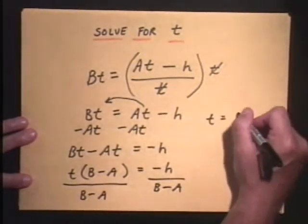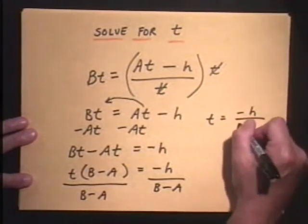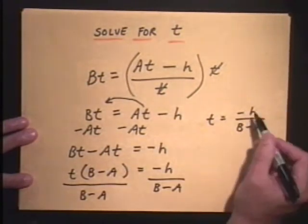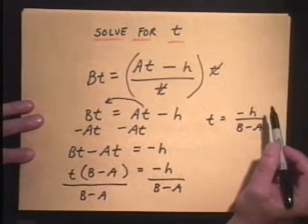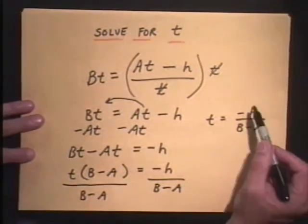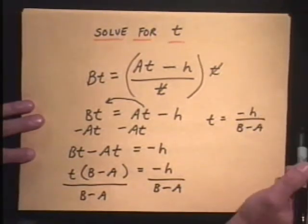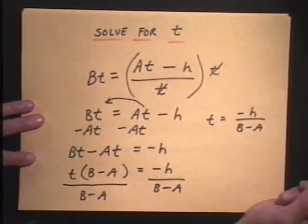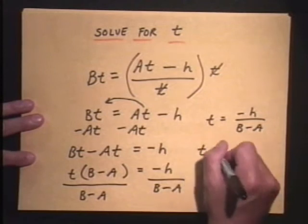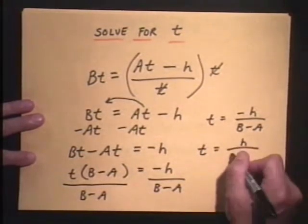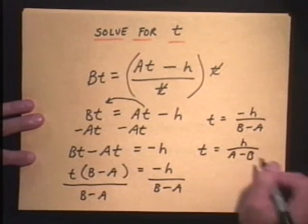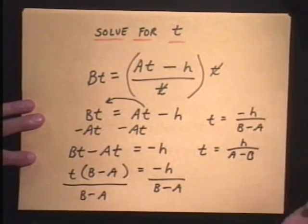So t, then, would equal a negative h divided by B minus A. But again, in science class, you may not like that. It has a lot of negatives in it and stuff, doesn't it? The h is negative. You have to subtract the A. So you might see the same answer in certain algebra books look like this. They might write it as t equals h over A minus B. These two answers are the same.